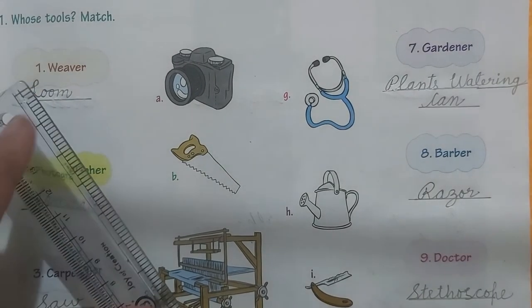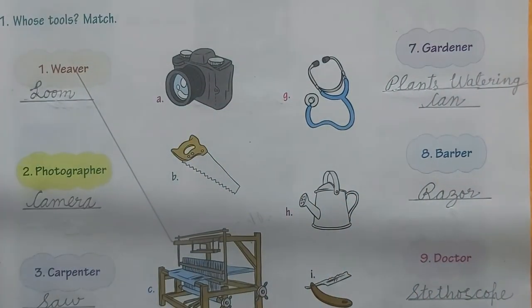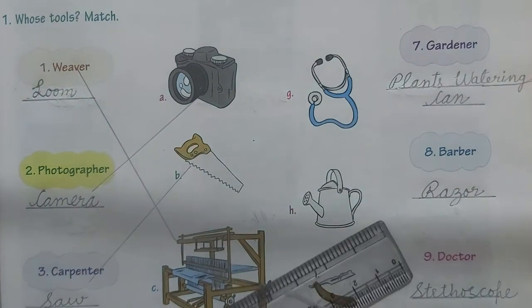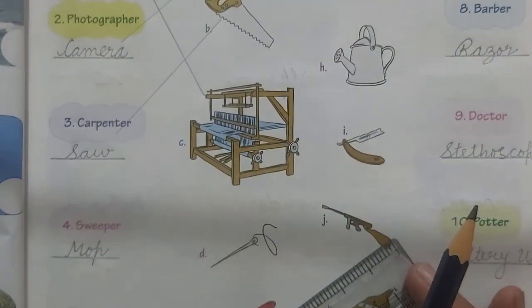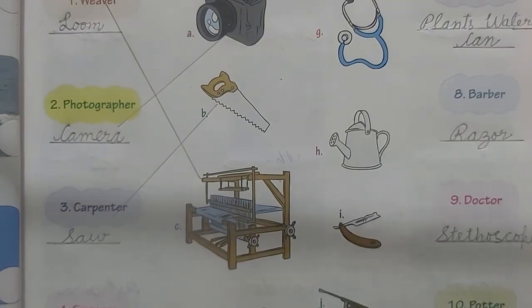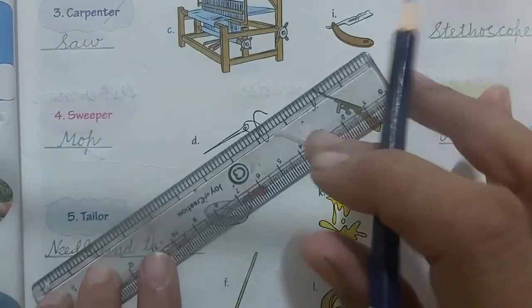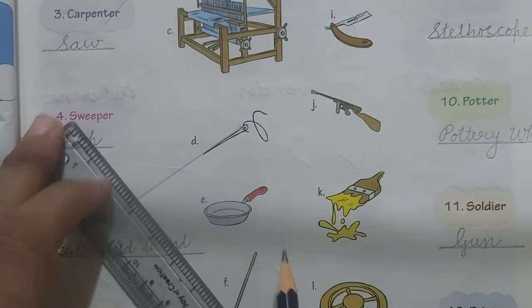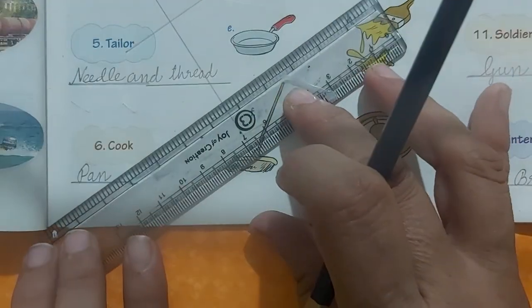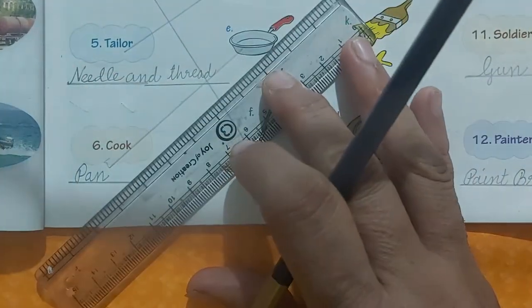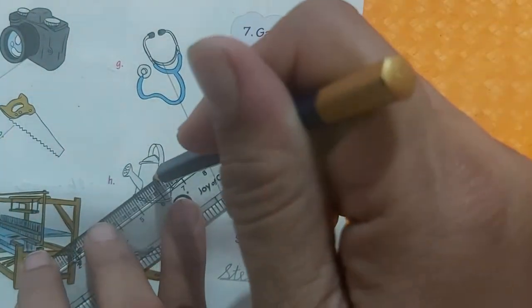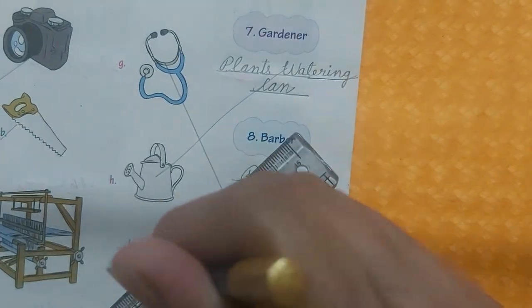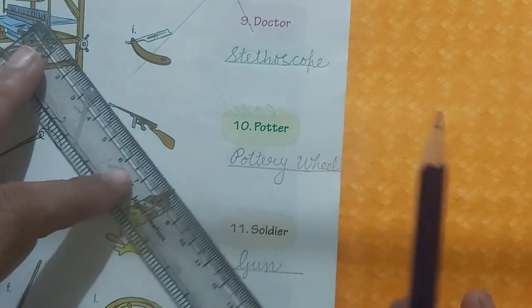Now, this is used by weaver, so I am matching this like this. Camera — this. Saw. Then comes needle and thread. Needle and thread by tailor, mop by sweeper, and pan by cook. This side — stethoscope by doctor, plant watering can by gardener, razor by barber, gun by soldier, paint brush and potter wheel by potter.